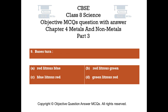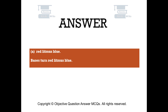Question number 9. Bases turn. Option A: red litmus blue. Option B: red litmus green. Option C: blue litmus red. Option D: green litmus red. The right answer is option A. Red litmus blue. Bases turn red litmus blue.